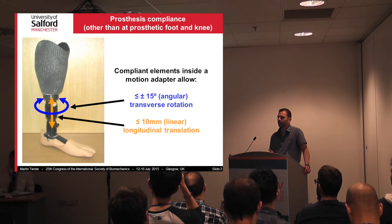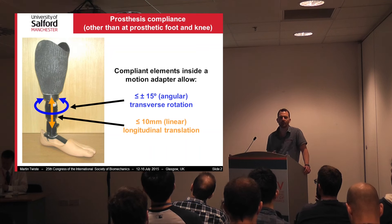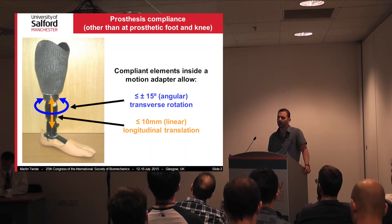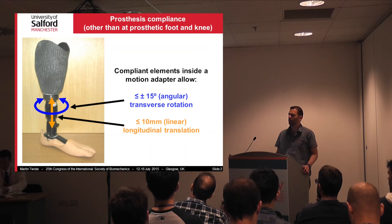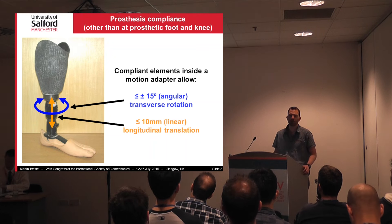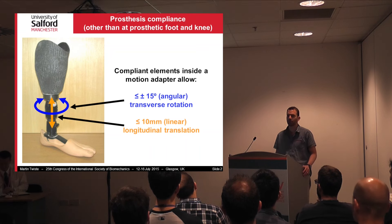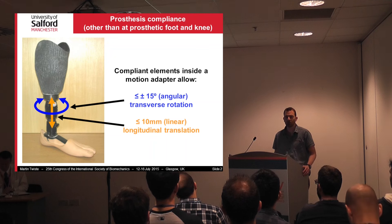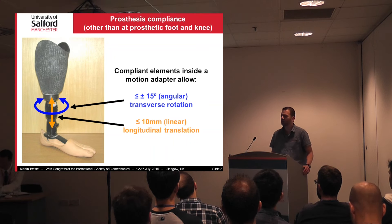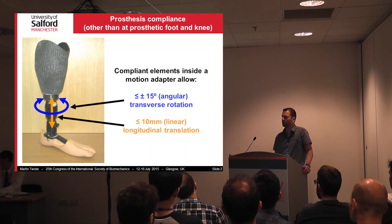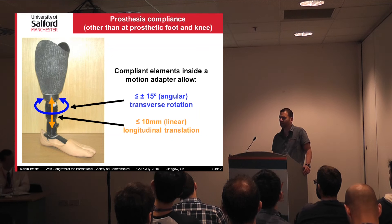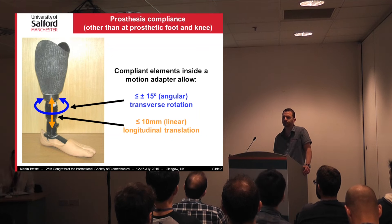You've got a prosthetic foot — if it's a SACH foot as Jamie was saying, you only get compliance due to some compression at the heel. Most feet allow sagittal plane motion: dorsiflexion and plantarflexion. If you've got a prosthesis higher than the knee, you also have a prosthetic knee joint which gives some flexibility. However, just proximal to the prosthetic foot you only have a rigid pylon. As an alternative, you could have a motion adapter which allows some transverse rotation and also some longitudinal translation.